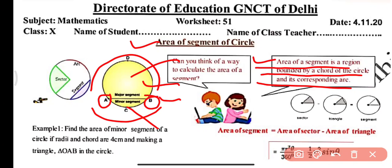Keep in mind: a chord forms two segments — one minor and one major. If the chord passes through the center, it becomes a diameter and makes two semicircles. In this figure you can see the sector, which is formed by corresponding radii and arc, and the segment, which is formed by a chord and its corresponding arc.